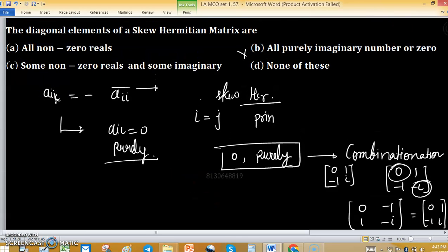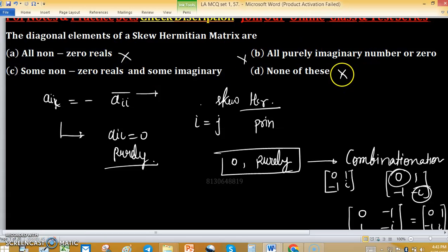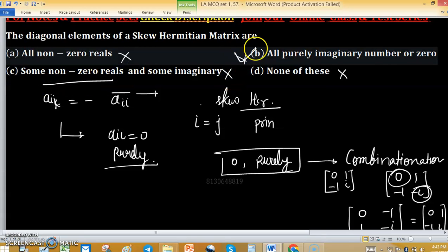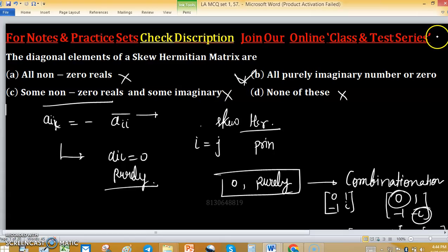So, come to the options. All non-zero reals - this is wrong. None of these - this is wrong. Some non-zero reals, non-zero - that's why this option is wrong. And option B is correct: all purely imaginary or 0. If it is purely imaginary or 0, then it will be the more appropriate option.